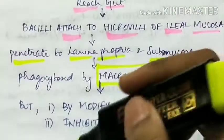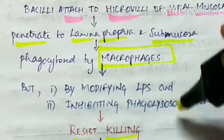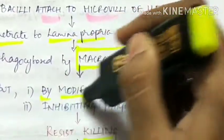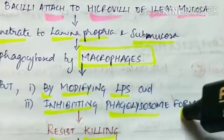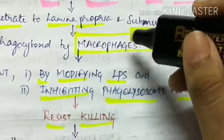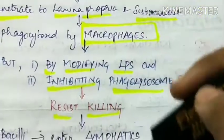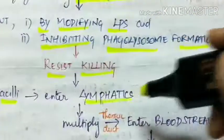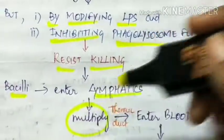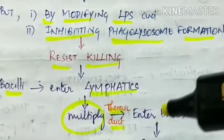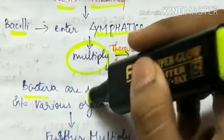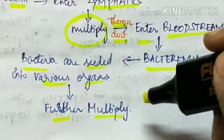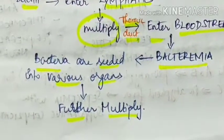But they resist killing by macrophages by two mechanisms: first by modifying the lipopolysaccharide, and second by inhibiting phagolysosome formation. So they are not killed by macrophages. From there the bacilli enter the lymphatics where they multiply, and through the thoracic duct they enter the bloodstream causing bacteremia. The bacteria are then seeded into various organs where they further multiply to cause the disease.